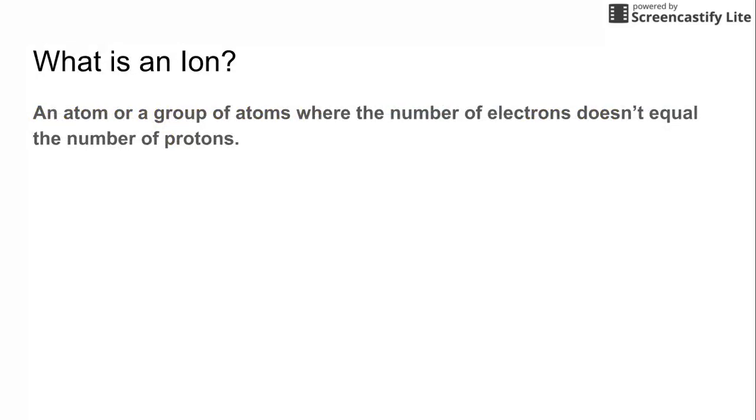So let's move on to talk about what an ion is. It's an atom or a group of atoms where the number of electrons doesn't equal the number of protons. So if you see a shift in that number of electrons, it becomes an ion, and it can be either positively charged or a negatively charged ion.